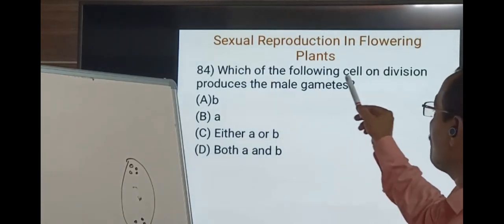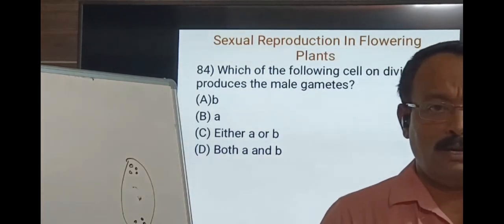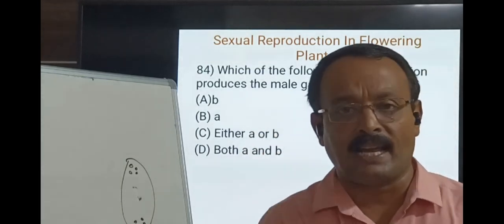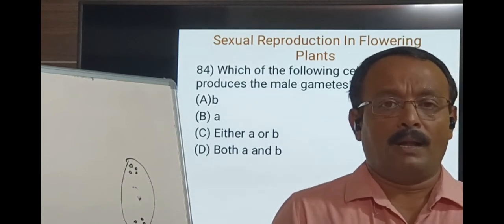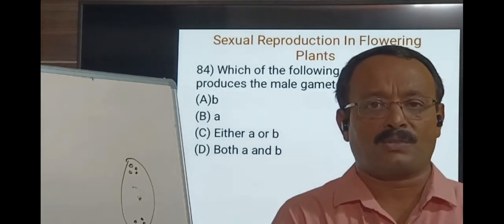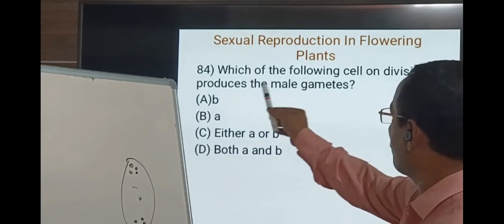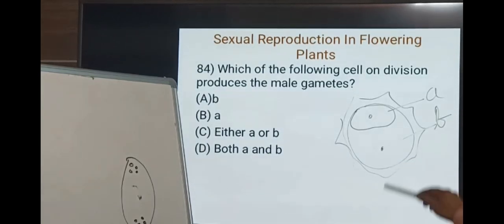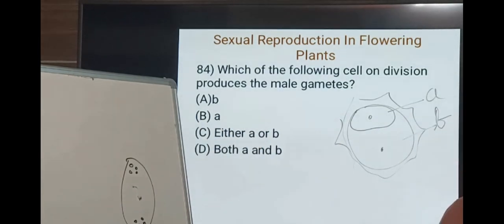Which of the following cell on division produces two male gametes? As we know, pollen shed at the two-cell stage has one large vegetative cell (tube cell) and another small generative cell floating in the cytoplasm of the vegetative cell. As the pollen tube reaches the ovary, initiated by the vegetative cell, the generative cell divides to produce two haploid male gametes. So it is produced by the generative cell — option B.